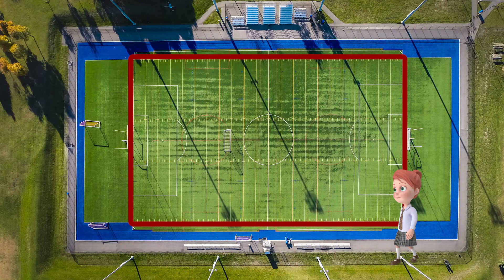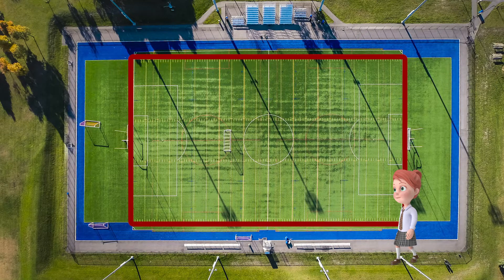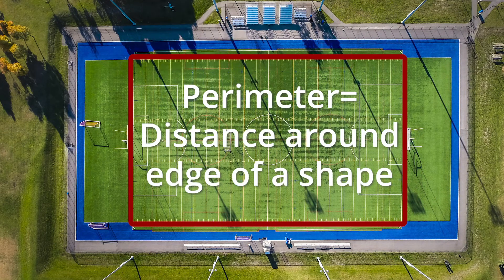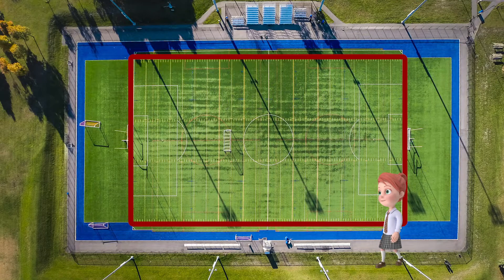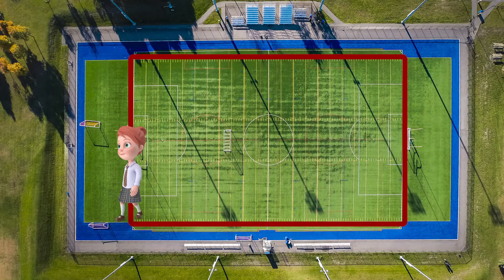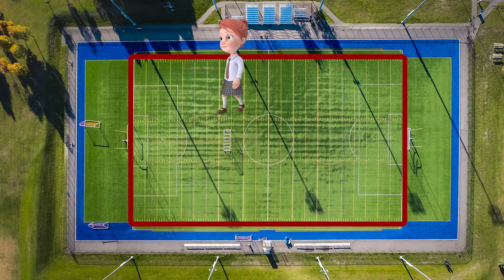See that red line going around the field? That's its perimeter. Simply put, the perimeter of a shape is the distance around the edge of it. Walk along that red line, measure how far you've gone, and you'll have the perimeter.